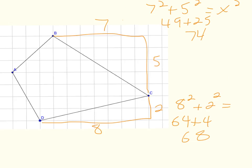Just to be complete, I'm going to do the right side of the shape. 7 and 5, a 2 and an 8. We come up with a 74 and a 68. So those two sides are not the same.